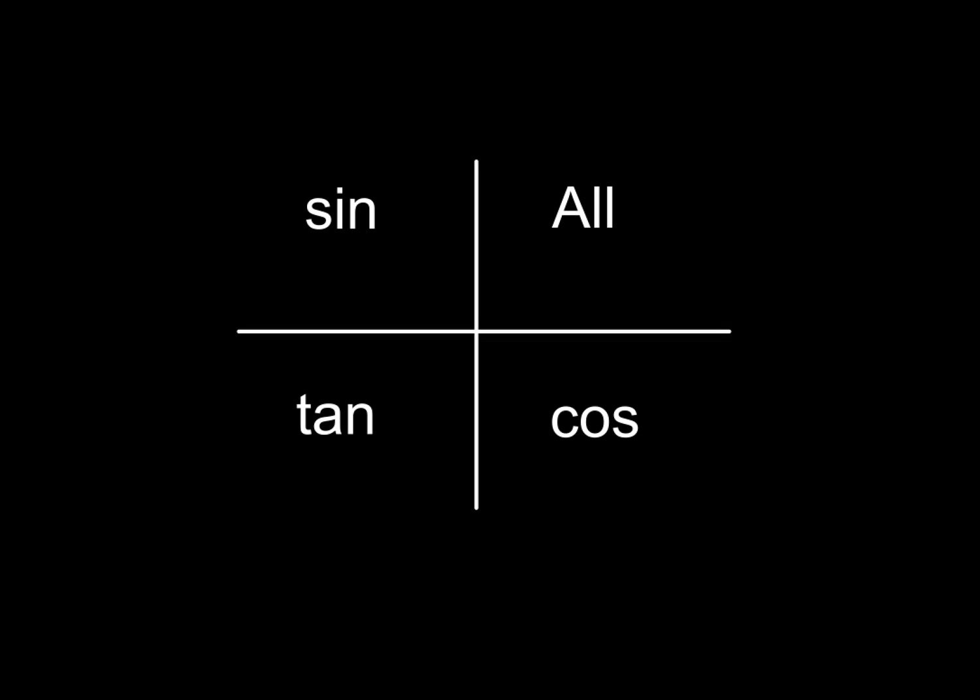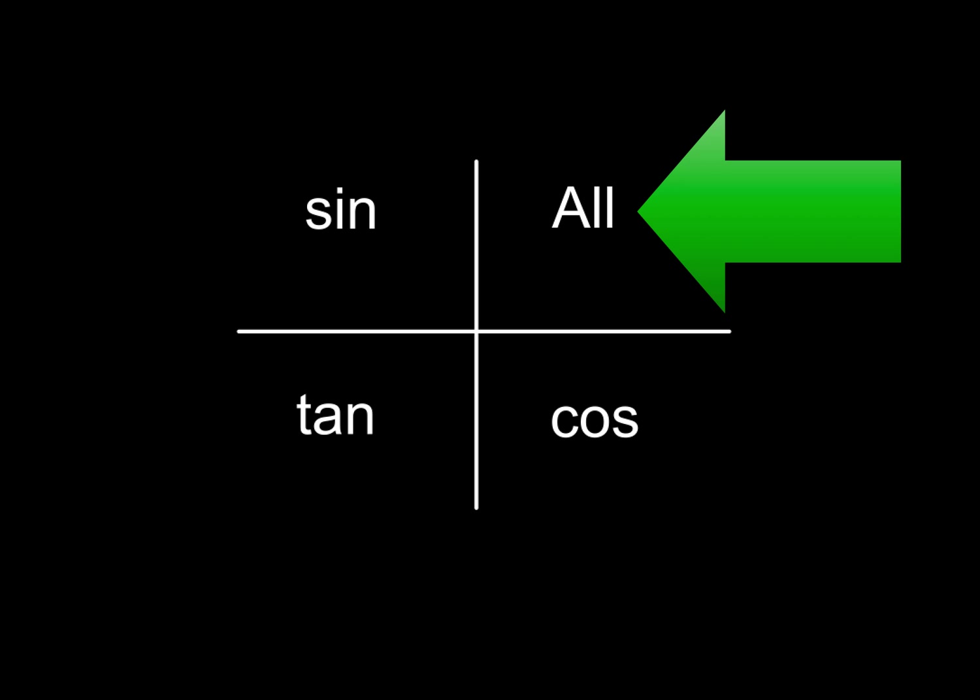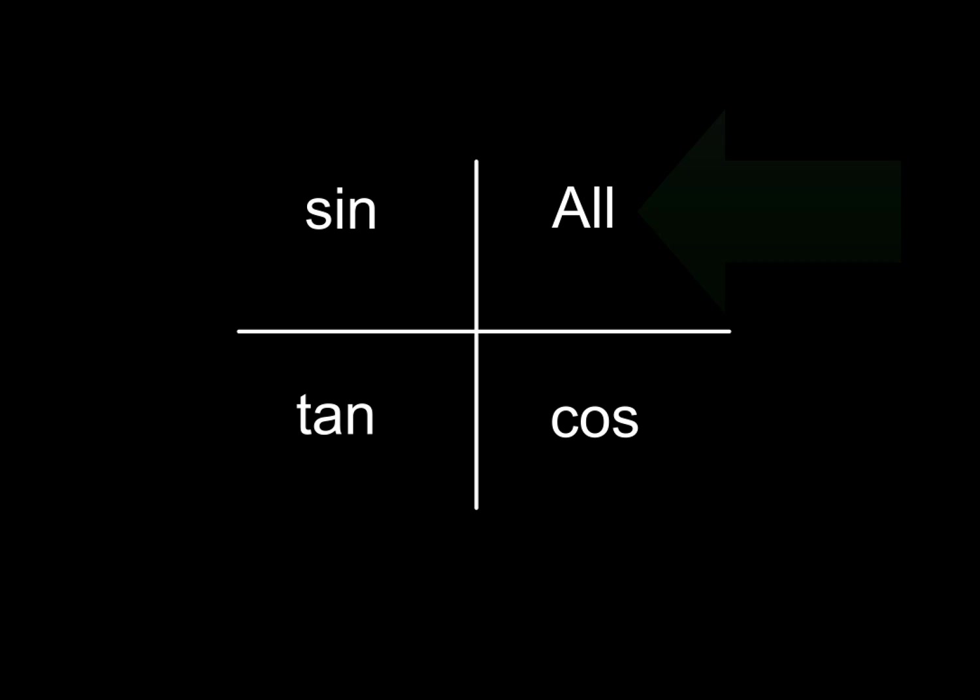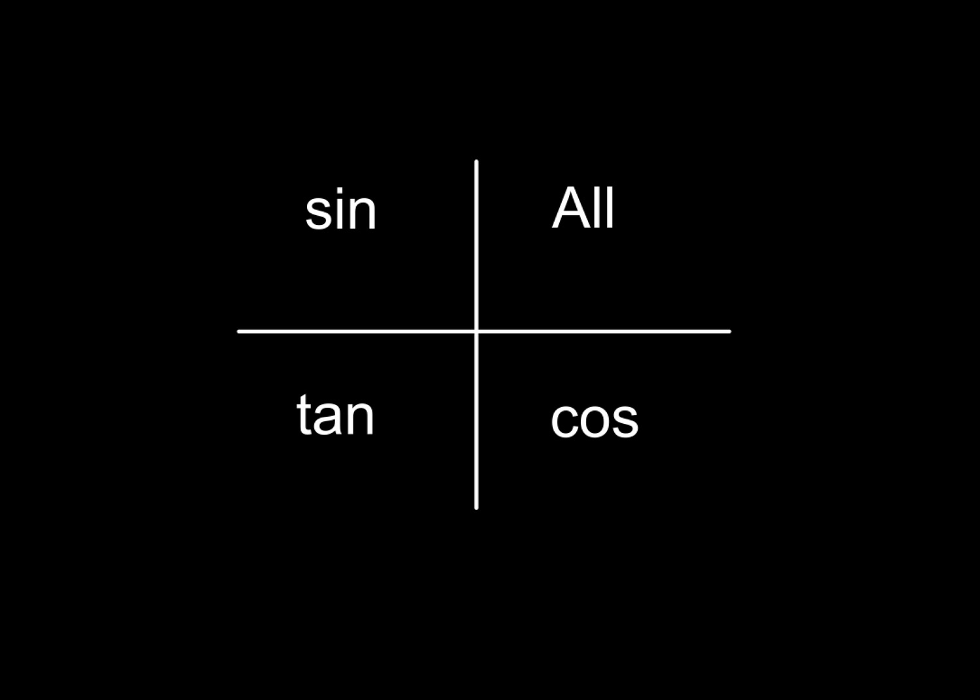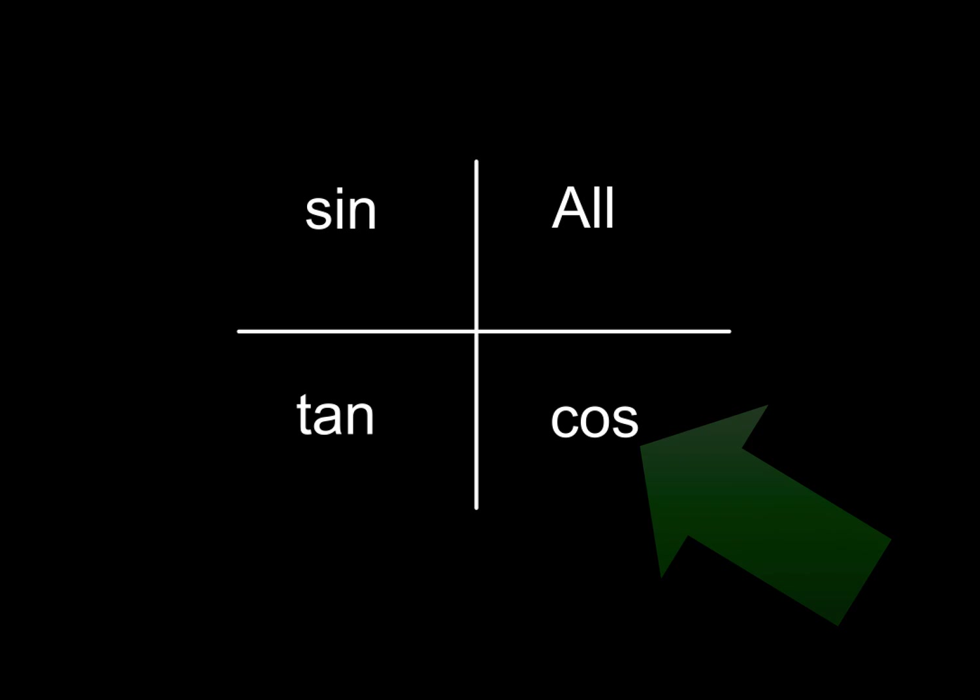Very often in math textbooks you'll see this picture. And what this picture wants you to do is know where each of the trig functions are positive. Of course, everything will be positive in quadrant number one, sine is positive in quadrant number two, tangent is positive in quadrant three, and cosine is positive in quadrant number four.